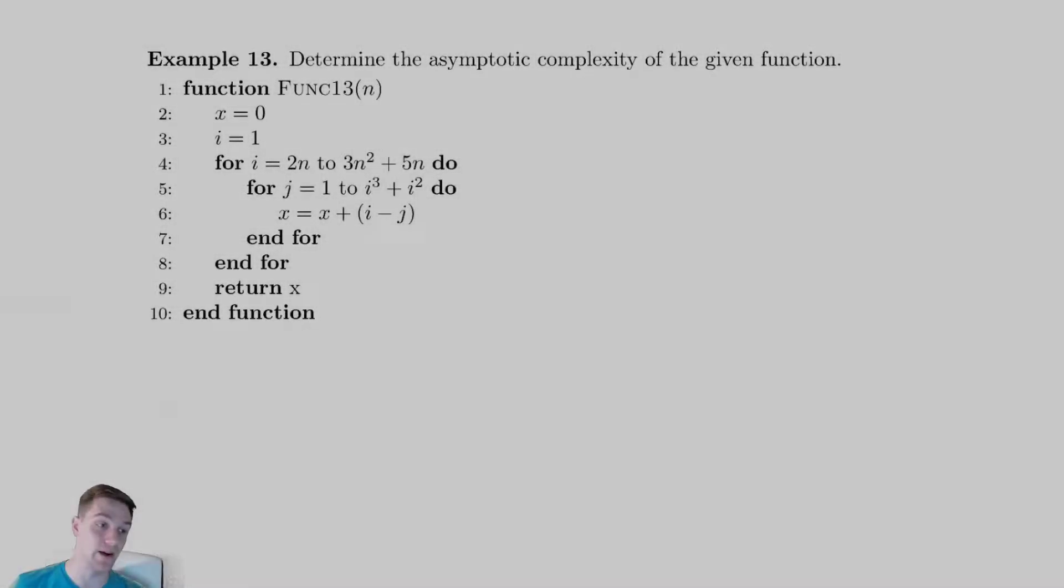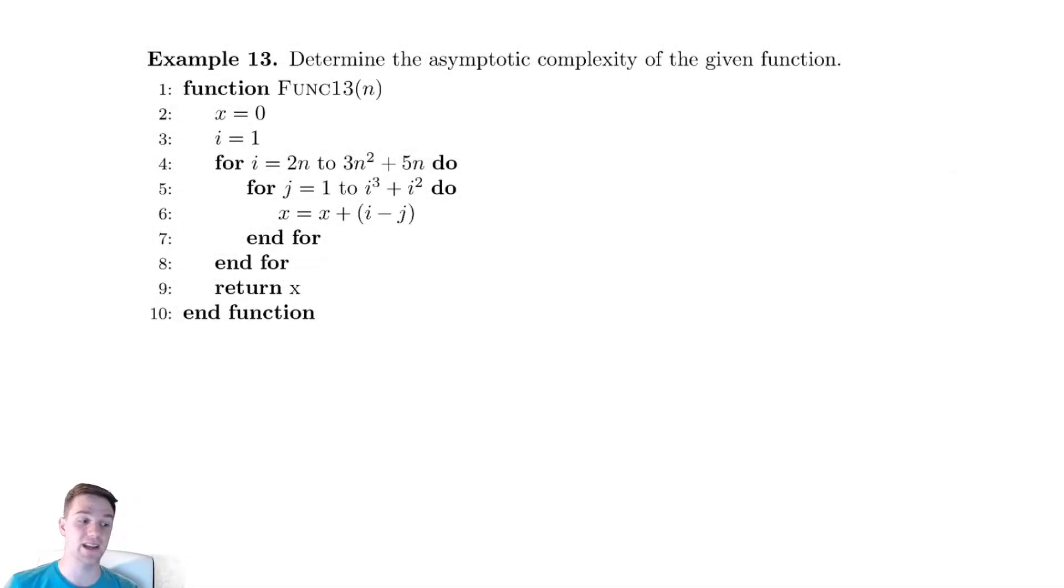For our last example on this handout, we are going to look at something that looks more akin to the sort of messes you might see in practice, where you have a bunch of non-convenient bounds. Our outer loop here has a 2n and a 3n squared plus 5n. Our inner loop has some i cubed plus i squared nonsense going on there. This is a royal mess just looking at it.